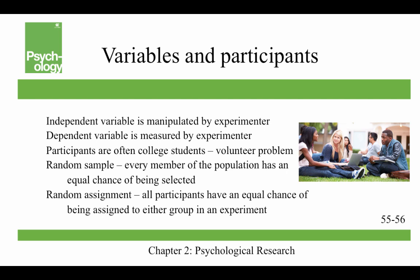An independent variable is manipulated by the experimenter, and a dependent variable is measured by the experimenter. The dependent variable's value is thought to be dependent on whether you receive the independent variable or not. Participants are often college students, and this leads to the volunteer problem — college students tend to be younger, more educated, more broad-minded, and less diverse than the general population, which is again an external validity issue. Ideally we like to work from a random sample, where every member of the population has an equal chance of being selected, but that really occurs only in textbooks. Much more common is random assignment, where all participants have an equal chance of being assigned to either group in an experiment — that's really critical for sound experimental design.